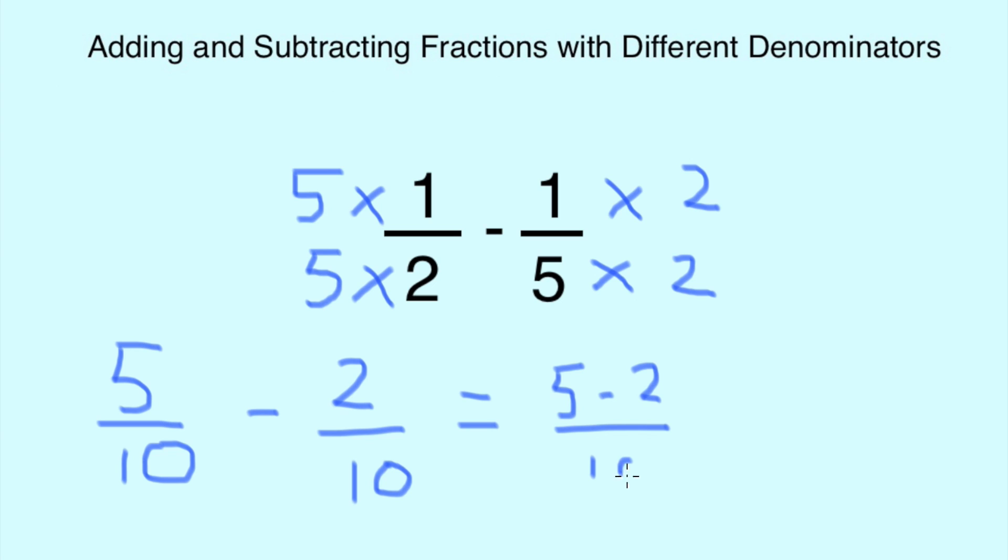which equals a final answer of 3 over 10. So 1 over 2 minus 1 over 5 is 3 over 10.